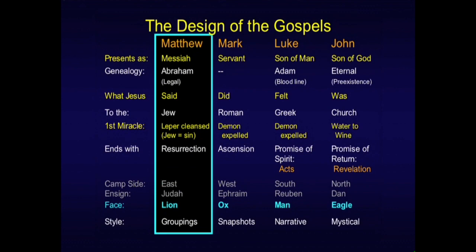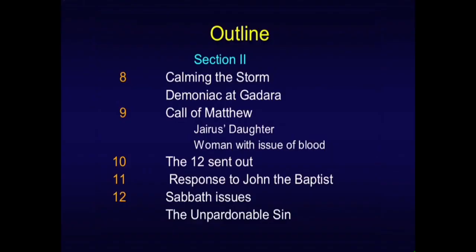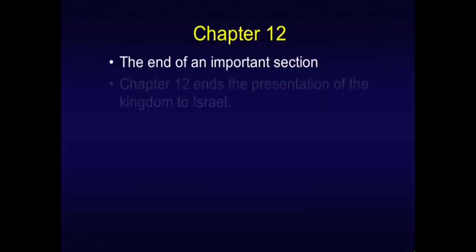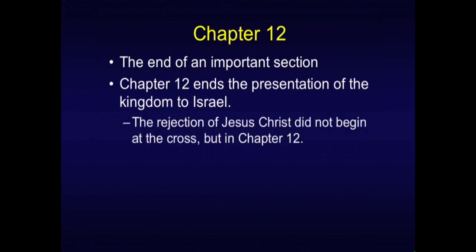We're going through this perspective for the Gospel of Matthew. Section 1 had four chapters: the genealogy, the birth, the baptism and temptation of Jesus Christ, climaxing with the Sermon on the Mount. Section 2 included the calming of the storm, the demoniac, the call of Matthew, the linked incidents of Jairus's daughter and the woman with the issue of blood, the twelve being sent out, the John the Baptist issue in chapter 11, and finishing with chapter 12 — the Sabbath issues and the unpardonable sin. Chapter 12 closes off section 2, ending with the presentation of the kingdom to Israel. The rejection of Jesus Christ did not begin at the cross; it started in chapter 12 when they ascribed his miracles to Satan.